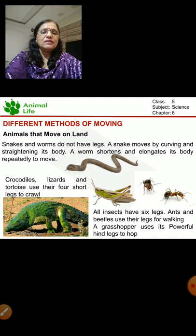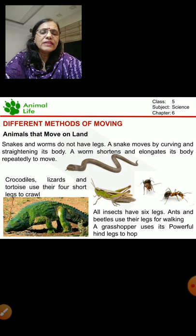Animals like crocodiles, lizards, and tortoise have four short legs to crawl. They can walk slowly.